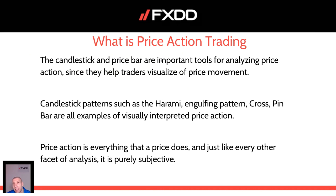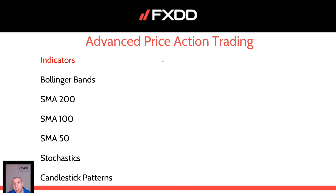For this advanced price action trading system, we need to incorporate the following indicators: Bollinger Bands, SMA 200, SMA 100, SMA 50, stochastics, and candlestick patterns. Bollinger Bands are set on a different time period, which I will explain, and we don't use EMA — only SMAs.